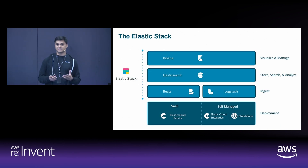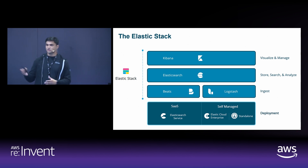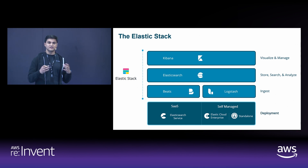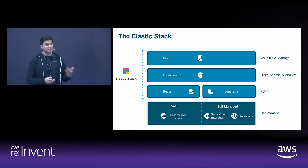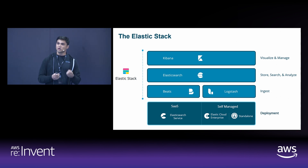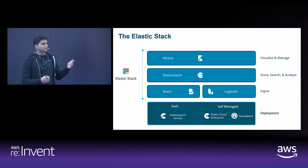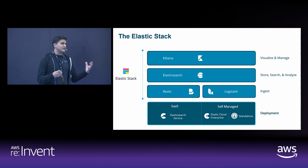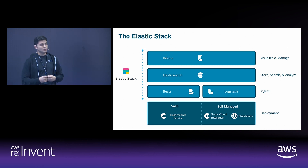Let's talk about the Elastic Stack. Elasticsearch is a distributed search engine — it does storage, search, and analysis. On top of that, you have Kibana as the visualization layer to help you search and manage everything within Elasticsearch. To get data in, you use ingest, Beats, or Logstash. Beats are purposeful, lightweight shippers that deploy on your edge devices, collect and parse data, and send it to Elasticsearch. Logstash is more of an ETL-style tool, grabbing large amounts of data, taking in lots of logs and network data, making it available at high capacity.